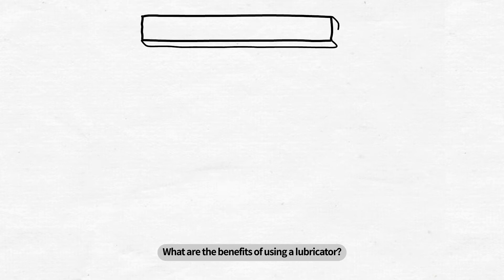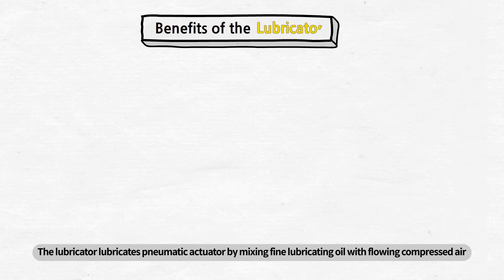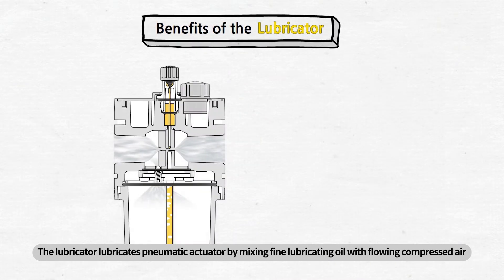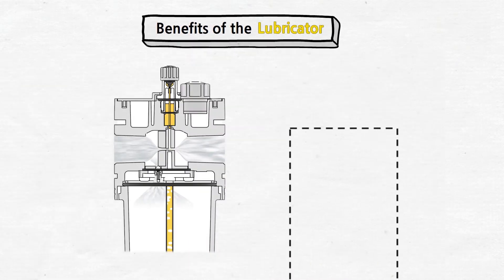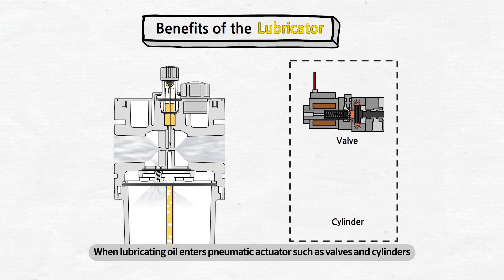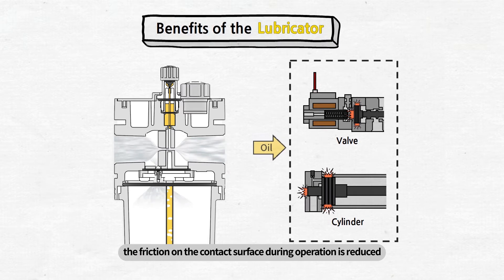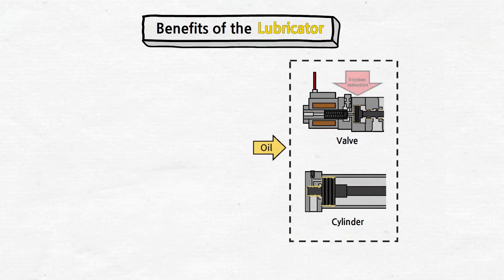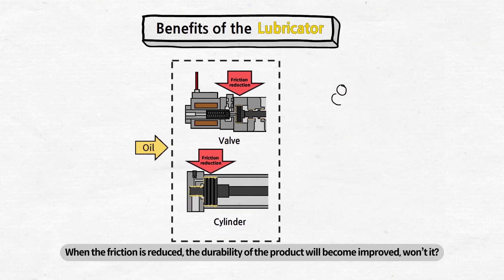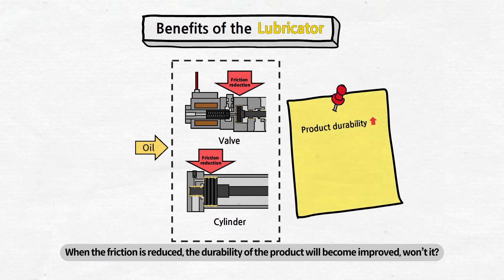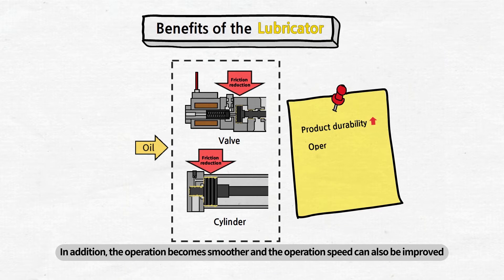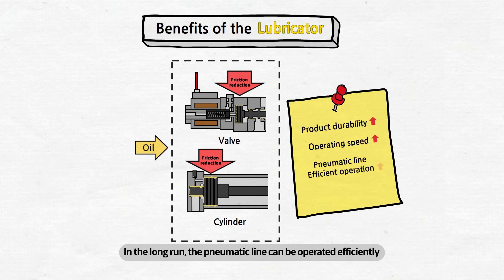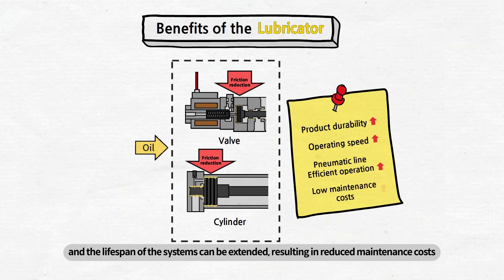What are the benefits of using a lubricator? The lubricator lubricates pneumatic actuators by mixing fine lubricating oil with flowing compressed air. When lubricating oil enters pneumatic actuators such as valves and cylinders, the friction on the contact surface during operation is reduced. When the friction is reduced, the durability of the product will become improved. In addition, the operation becomes smoother and the operation speed can also be improved. In the long run, the pneumatic line can be operated efficiently and the lifespan of the systems can be extended, resulting in reduced maintenance costs.